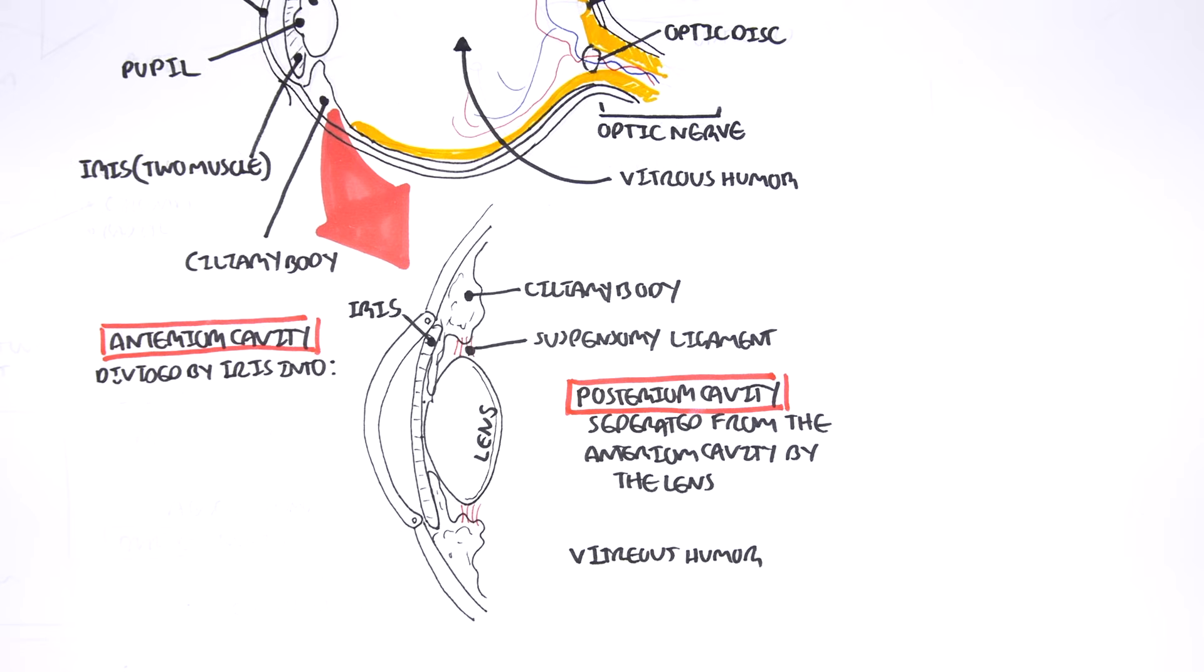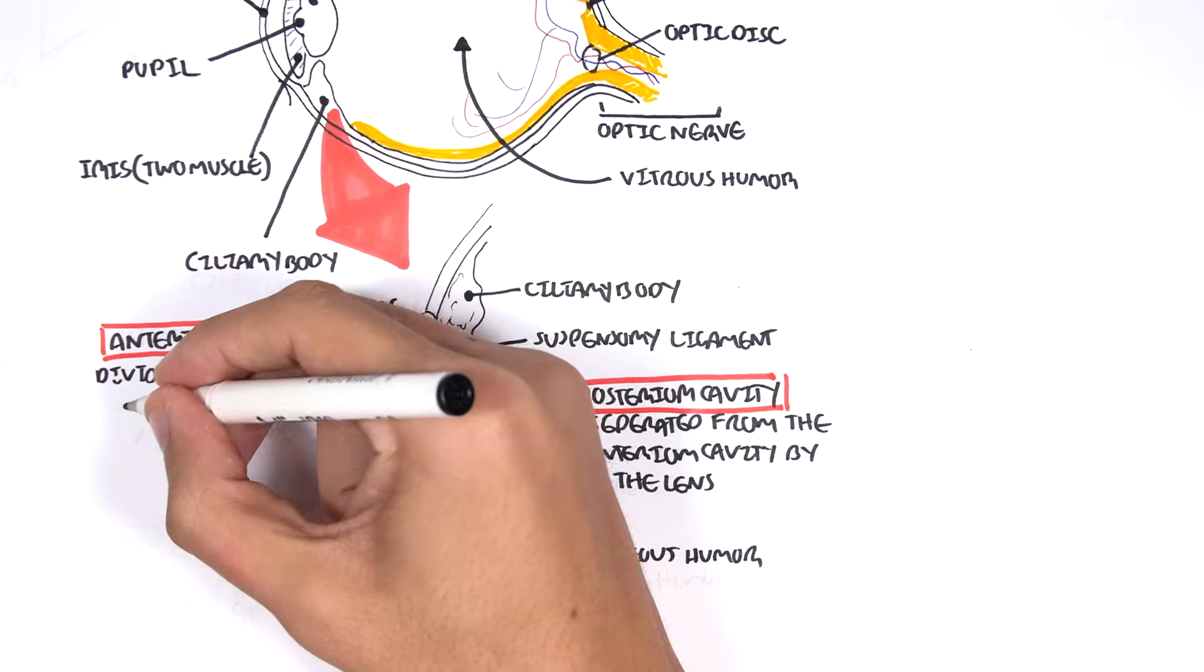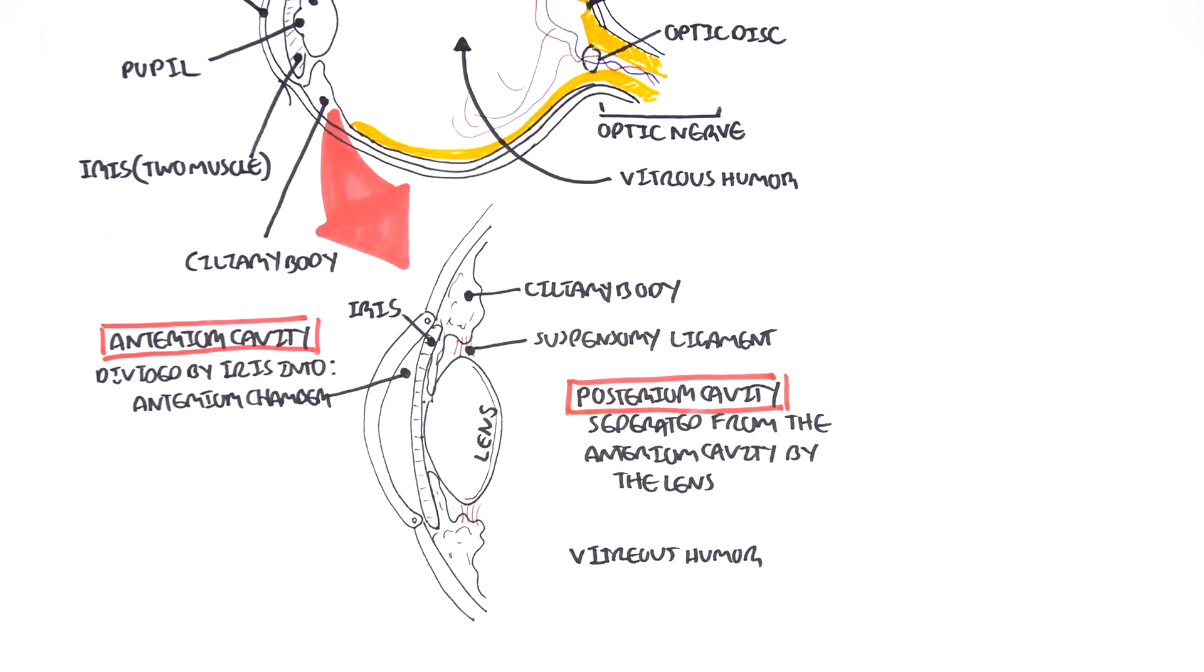Now let us talk about the anterior cavity, which is separated from the posterior cavity by the lens. But the anterior cavity can be further divided by the iris into the anterior chamber and posterior chamber.